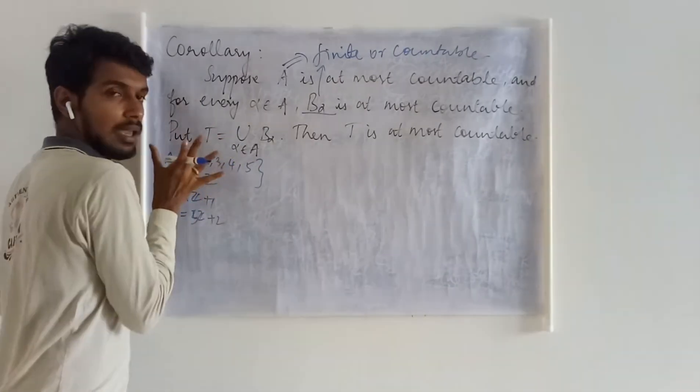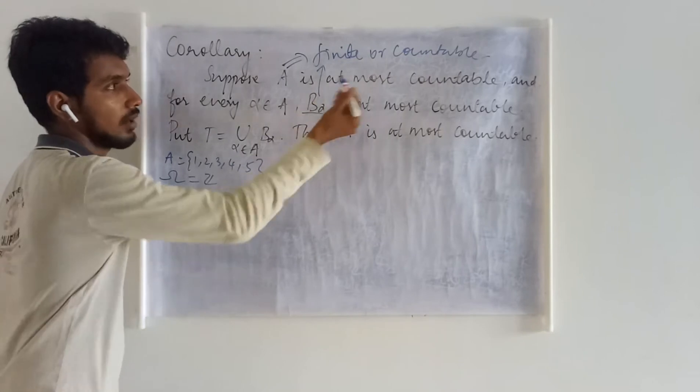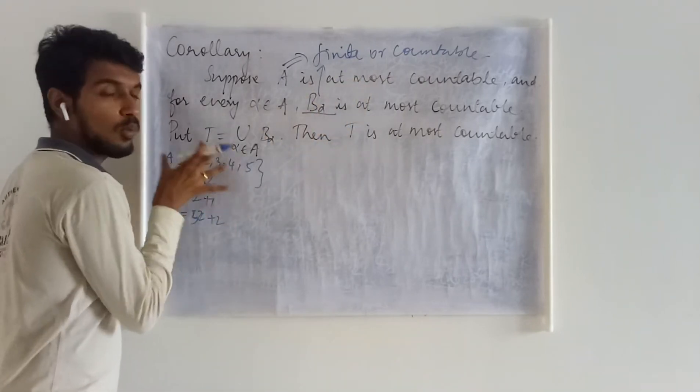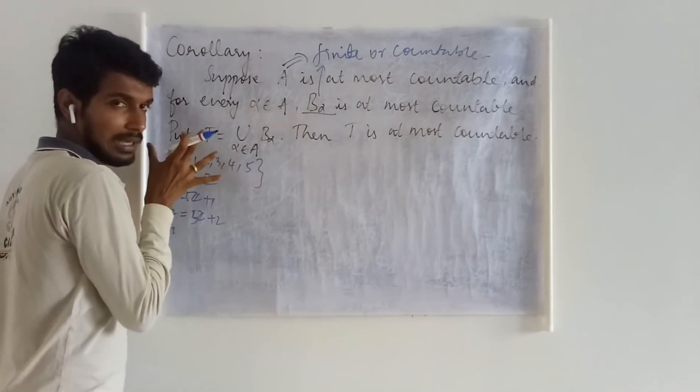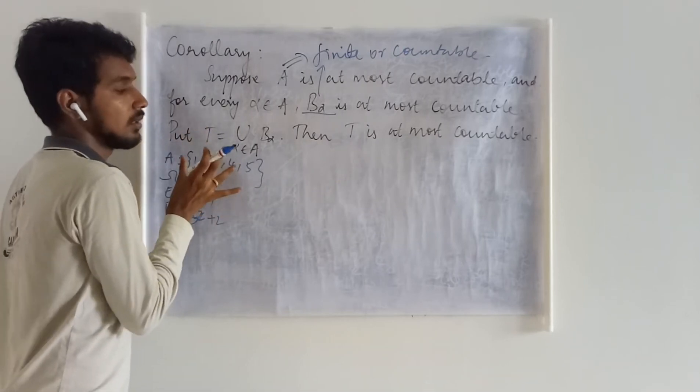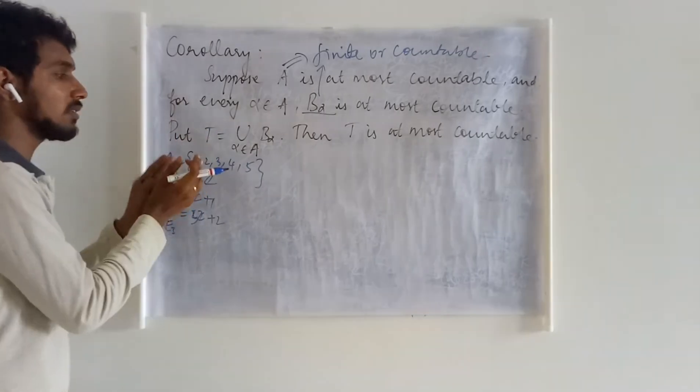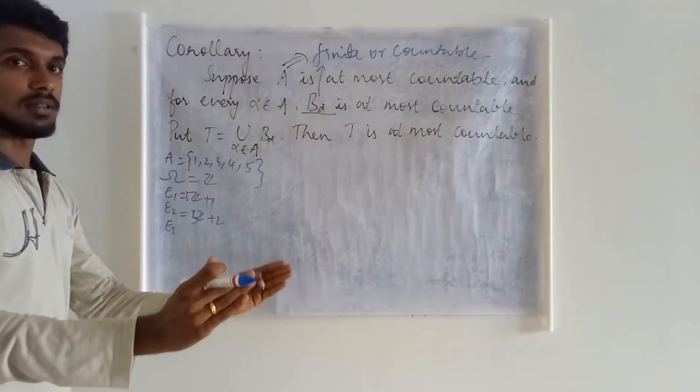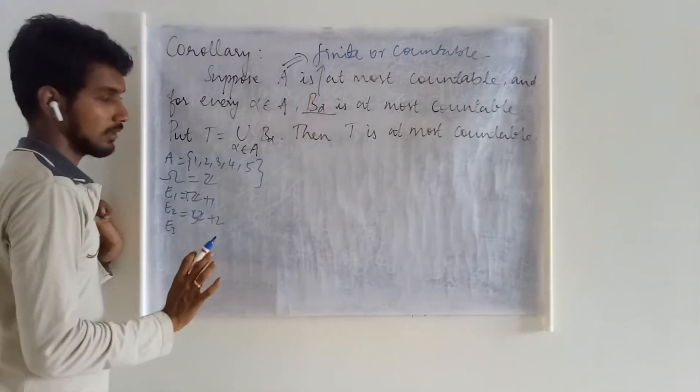By saying it finite, we can also say it as at most countable. If we exactly know what kind of set this is, we can say about whether it is finite or infinite or countable. Since it is not, it can be generalized in a more general sense that it is at most countable set.